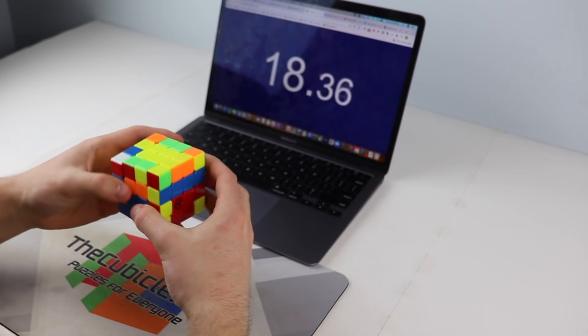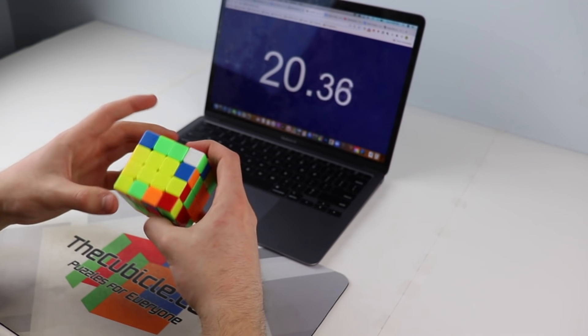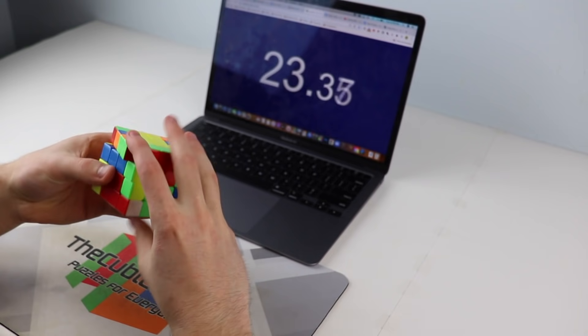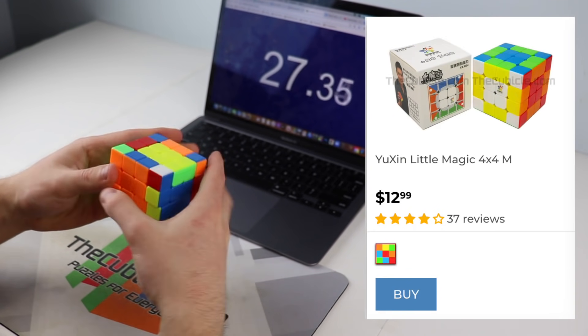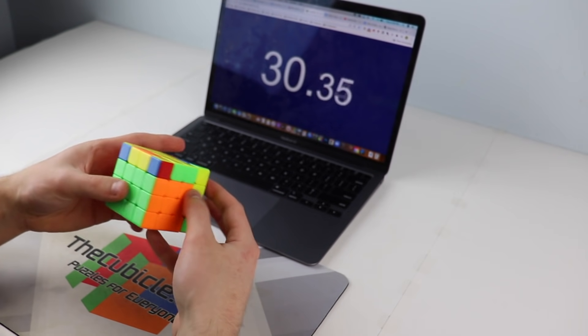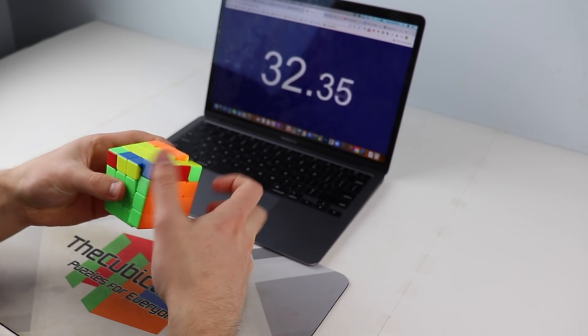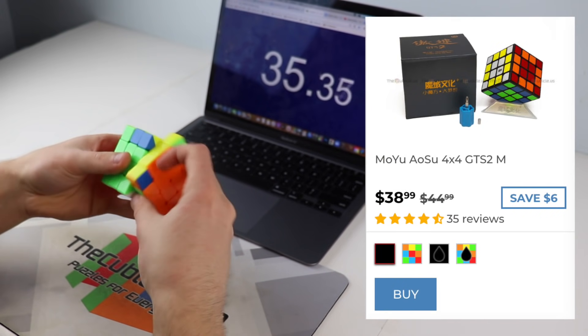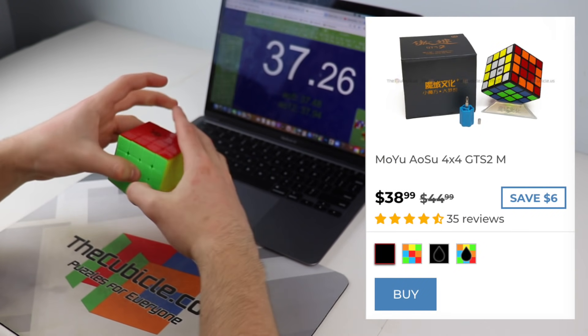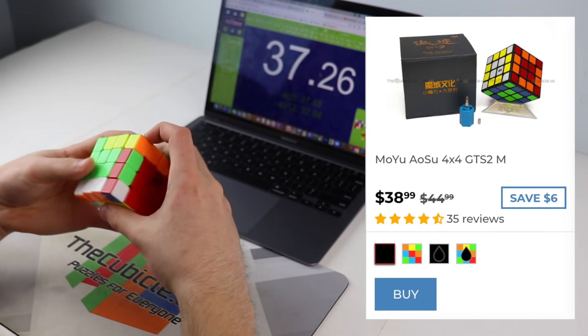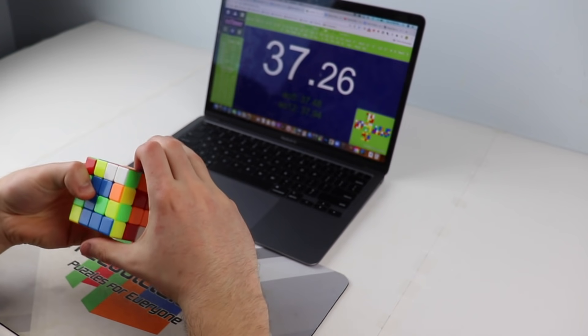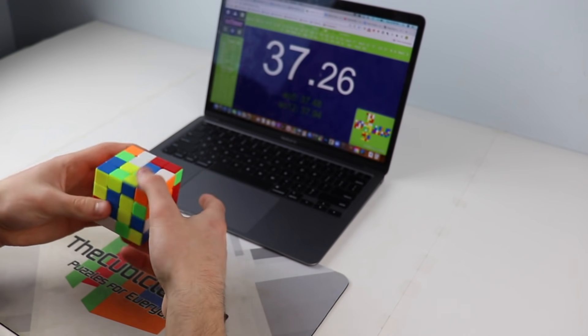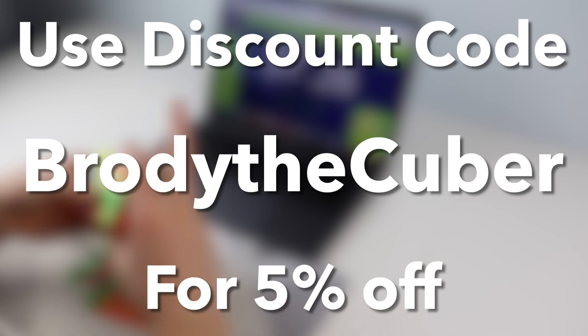Budget 4x4s aren't quite as serviceable as budget 2x2s or 3x3s, but if you can only get a budget cube, it'll be good enough. The Yushin Little Magic 4x4 is a great starting option that only costs $13. And if you're willing to go a bit more high-end, my absolute favorite 4x4 is the Moyu Aosu GTS-2M, especially with any of the premium setup options that the cubicle offers. I'll have both of those cubes and maybe a few others linked in the description. No matter which 4x4 you end up getting, make sure that you use the discount code BrodyTheCuber when you check out so that you'll get 5% off your order.